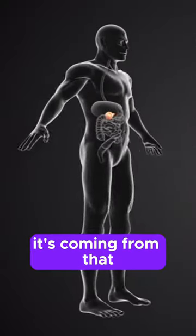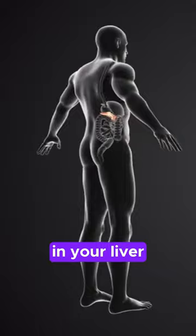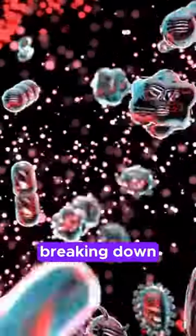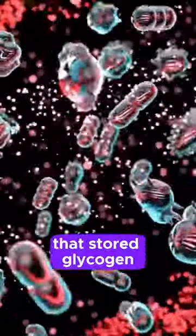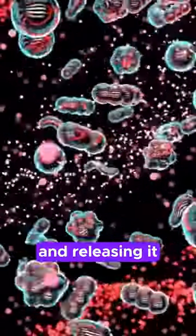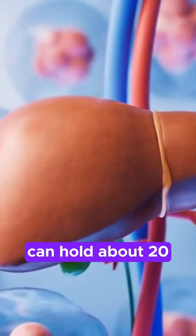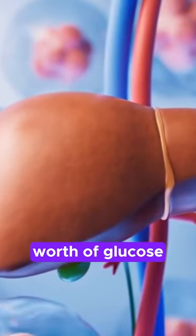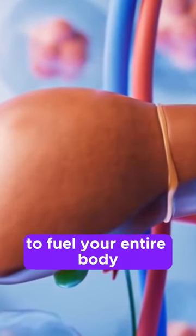Instead, it's coming from that glucose storage site in your liver. The liver is now breaking down that stored glycogen into glucose and releasing it into your system. On average, your liver can hold about 20 to 24 hours worth of glucose to fuel your entire body.